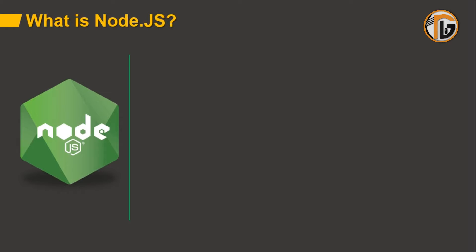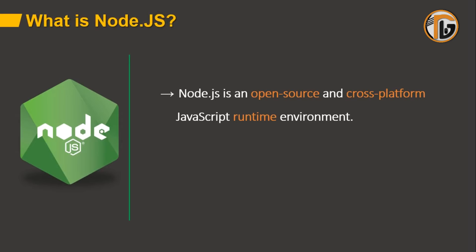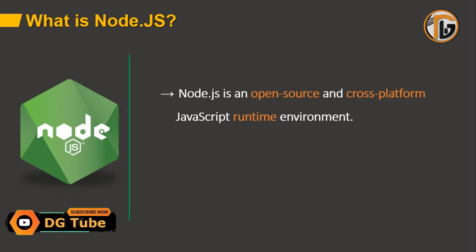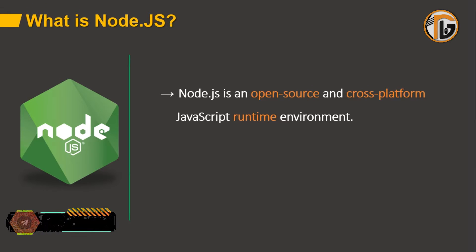What is Node.js? It is an open source and cross-platform JavaScript runtime environment. Node.js is open source, cross-platform, and also a runtime environment. The source code is available in Node.js and you can modify it.